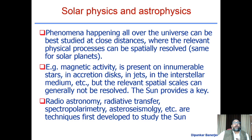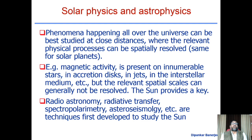There are many branches of astrophysics which were initially studied through the sun — primarily radio astronomy, radiative transfer, and a technique called spectropolarimetry. Solar physics, being one of the oldest branches of astrophysics, allowed us to test many new techniques first applied to solar observations and then later applied to other branches of physics.